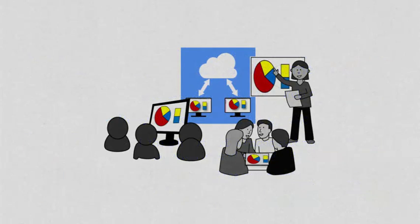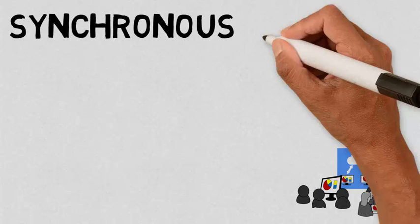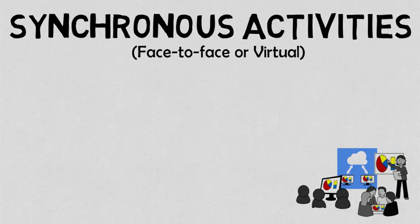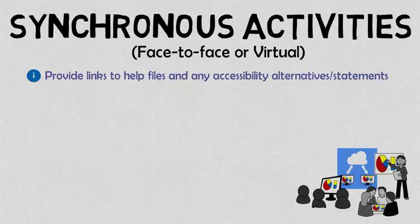For communication and collaboration that happens in real-time, either face-to-face or online, such as instant messaging or chat rooms and video conferencing, there are a few more best practices that can be incorporated in addition to those we have discussed for lecture delivery. The first is that before the activity, all participants should be provided with instructions or links to any help files or accessibility alternatives and statements specific to any technologies that may be used.